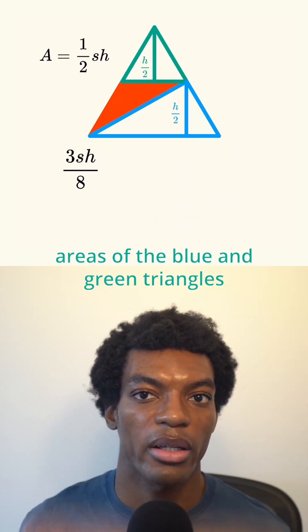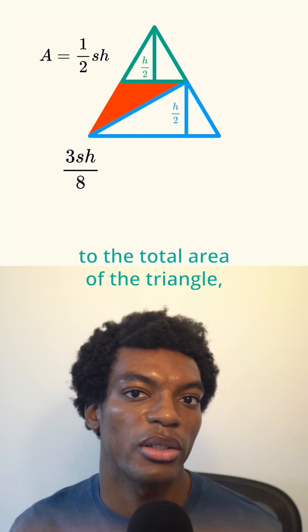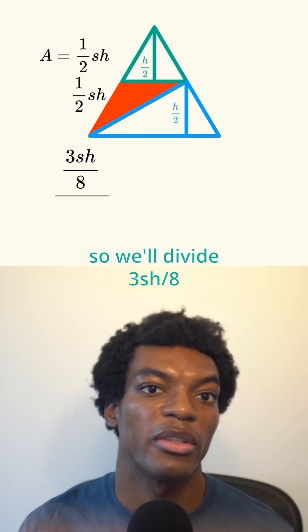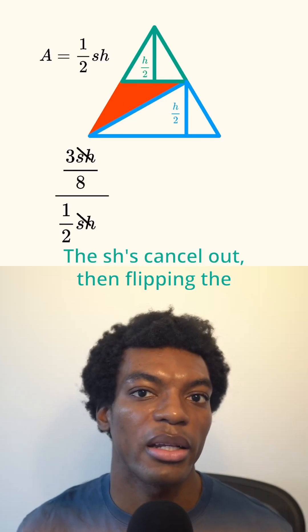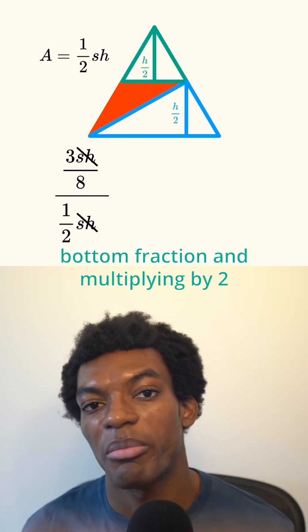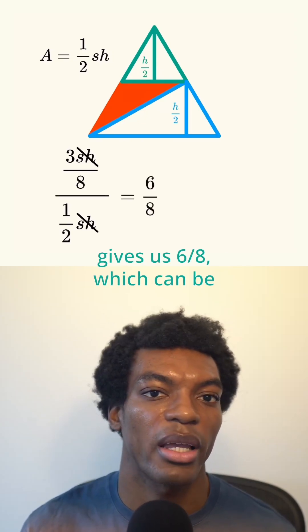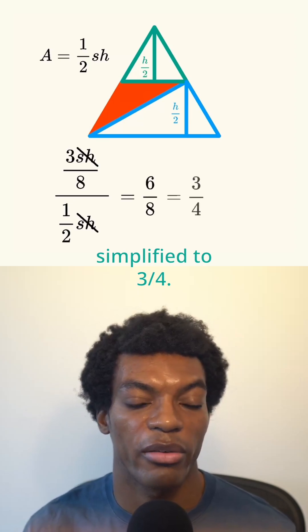Next, we'll find the proportion of the areas of the blue and green triangles to the total area of the triangle, so we'll divide 3SH over 8 by 1 half SH. The SH's cancel out, then flipping the bottom fraction and multiplying by 2 gives us 6 over 8, which can be simplified to 3 over 4.